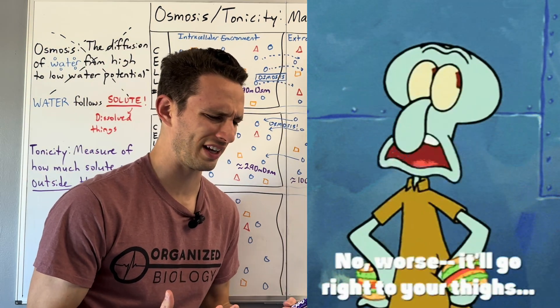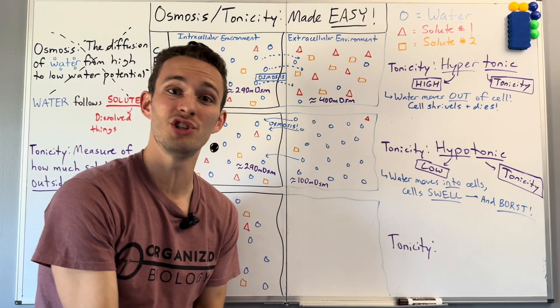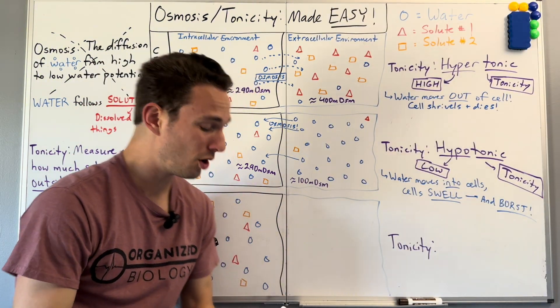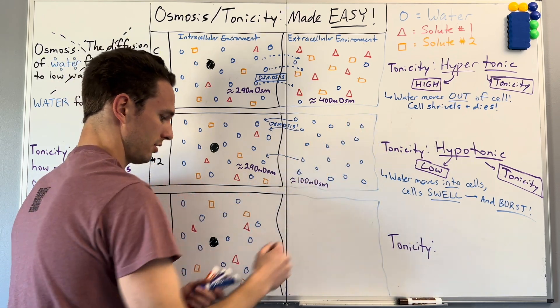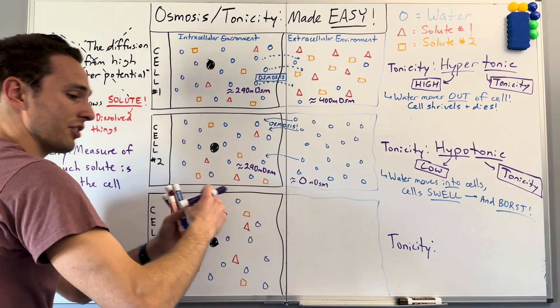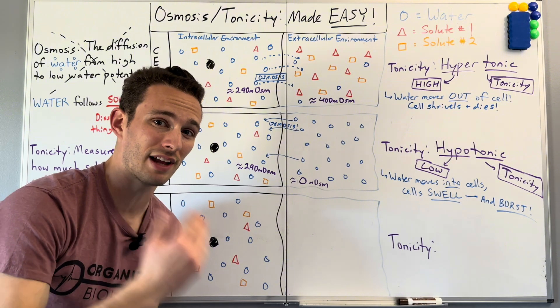Just like Squidward when he ate way too many Krabby Patties. This is why if you inject somebody with pure water, which actually has an osmolarity of zero, it would have no solute in it, water will move rapidly into the cells, expand, blow them up, and they will likely die.